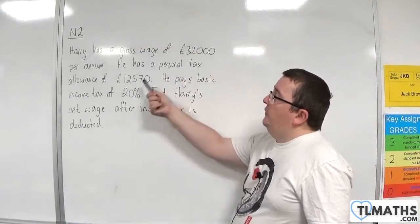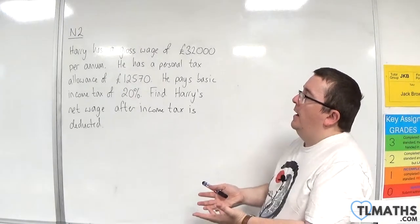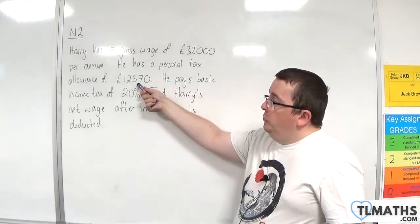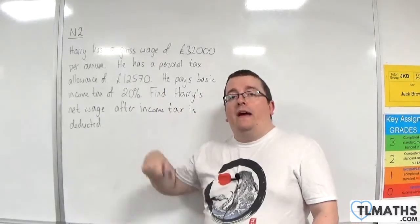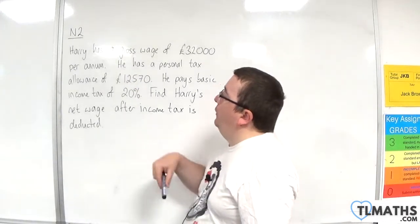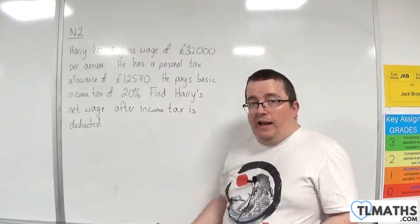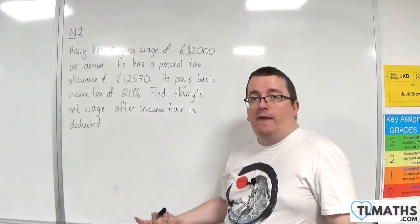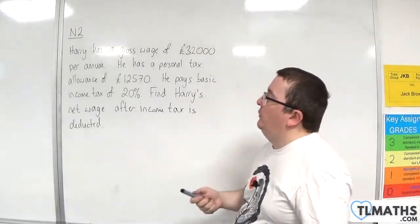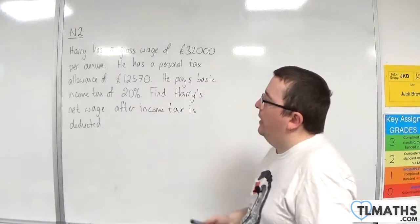He has a personal tax allowance of £12,570. Everyone has a personal tax allowance in England, and what that means is that someone can earn up to £12,570 per year without having to pay income tax. So if you earned £12,580 a year, the first £12,570 won't get taxed, but the £10 you earn over that will get taxed — at a basic rate of 20%. He pays basic income tax at 20%. This personal tax allowance does change every year, but you can easily Google that to find out what it is.